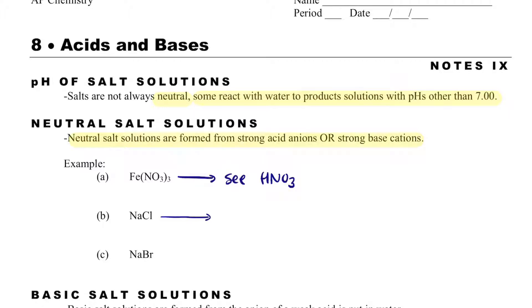In NaCl, I see HCl, which is a strong acid, so I know it's going to be neutral. And in NaBr, I see HBr, which is a strong acid, so I know it's going to be neutral.